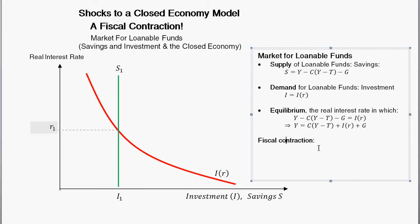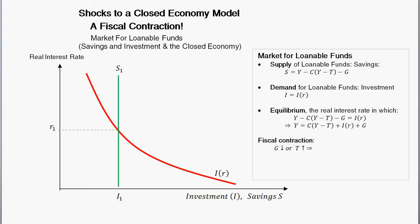So what's the effect of a fiscal contraction? A fiscal contraction is a situation where the government budget balance improves — meaning either taxes go up or government spending goes down. The government budget is the difference between taxes and spending, and that difference has improved. So to summarize: a fiscal contraction means reducing government spending or increasing taxes.